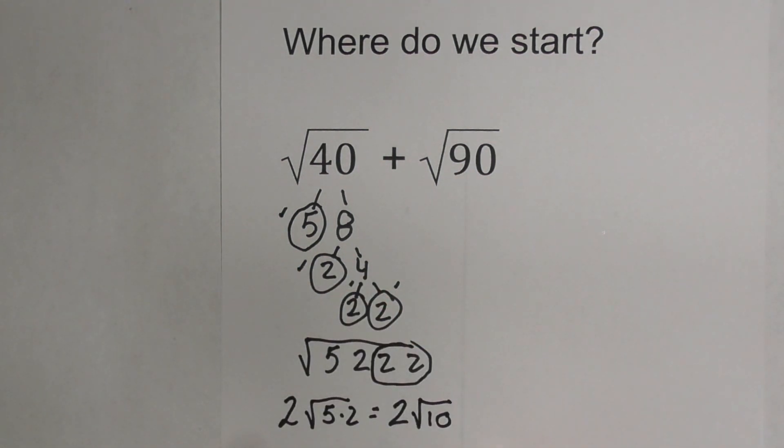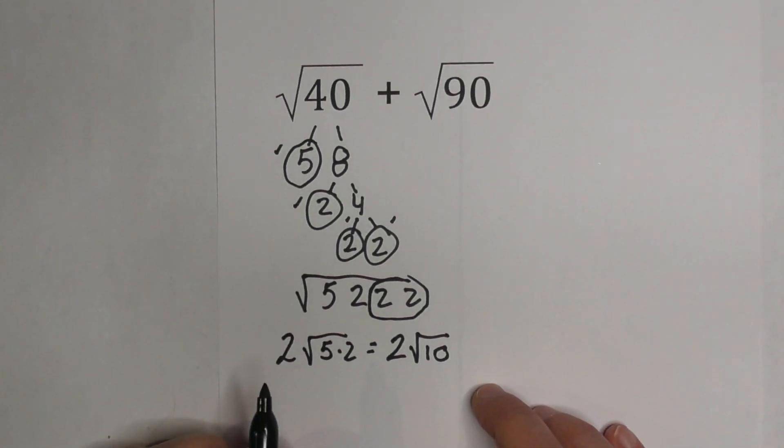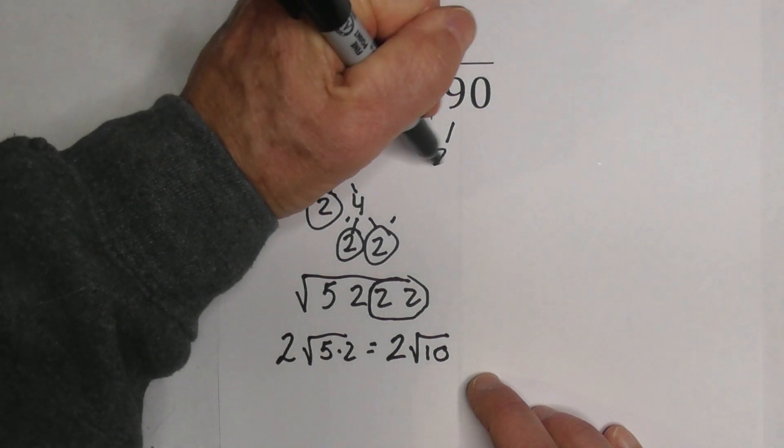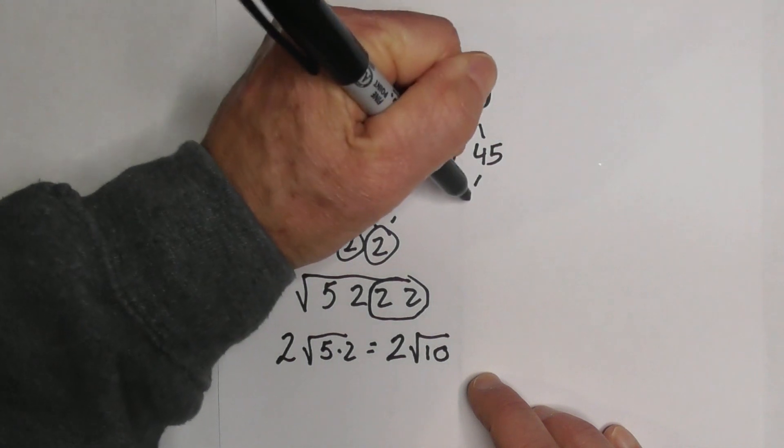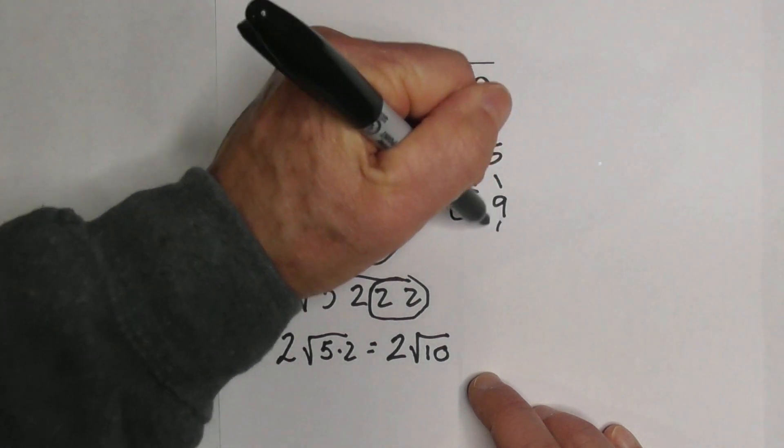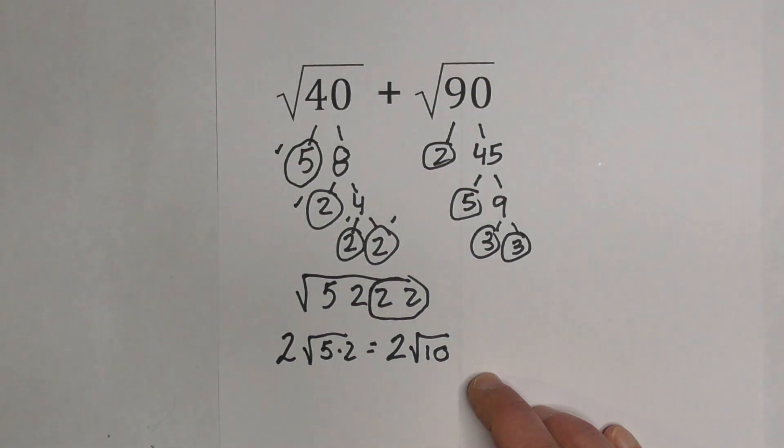Okay, so now let's do the same thing for the 90. Let's begin with 90. Why don't we go 2 times 45, because that equals 90, and then let's go 5 times 9, circle the 5 because it's prime, and then 3 times 3.